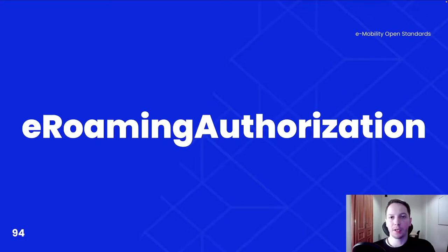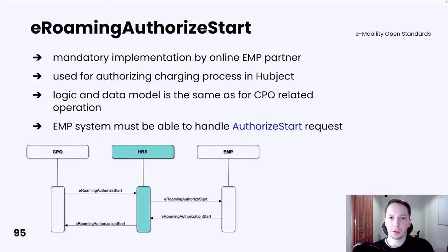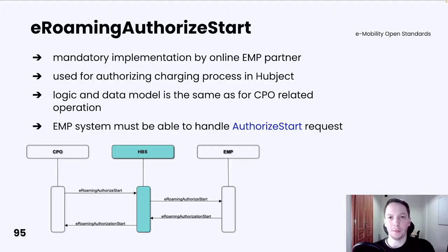E-Roaming Authorization Service. The first operation is E-Roaming Authorize Start. Similar to CPO, it is used for authorizing the charging process in the Hubject platform. Its implementation is mandatory for every online EMP partner. The data model and logic are the same as for the CPO-related operation. The only difference is that EMP must be able to handle an Authorize Start request and return an E-Roaming Authorization Start response.